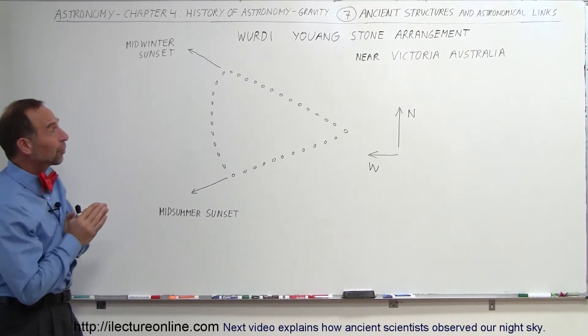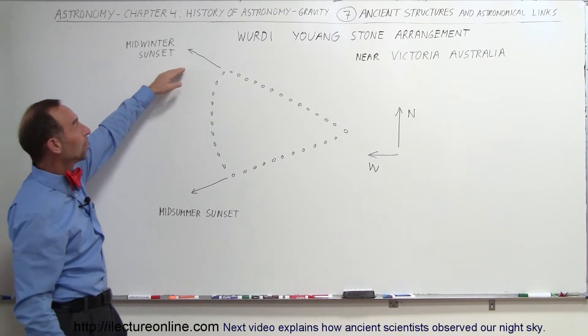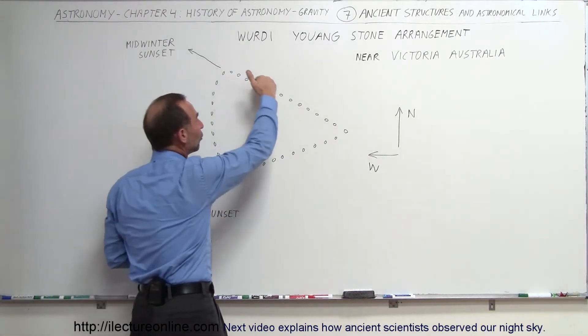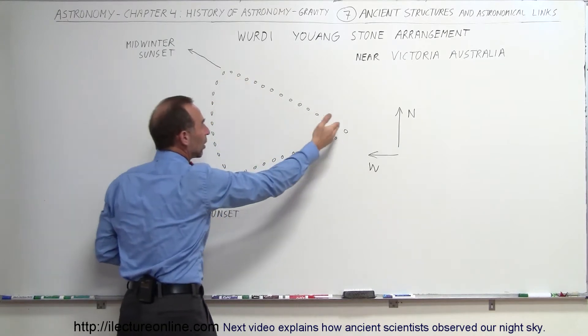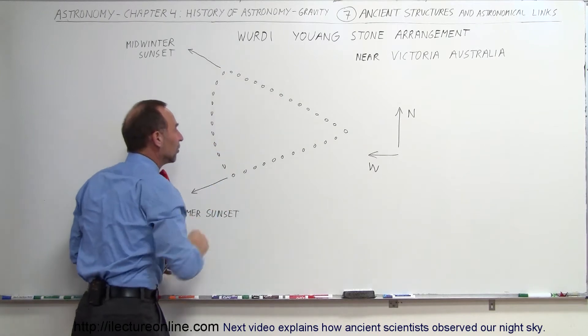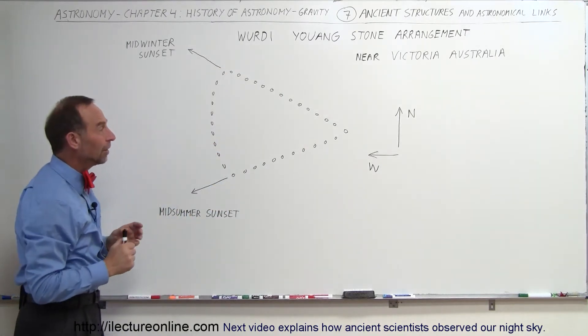Here we're near Victoria, Australia, and we have what we call the Wordy Young Stone Arrangement. There we had a wall of stones built in this direction, another wall of stones built in this direction, and then there would be a connection here, kind of a semi-arch in this direction.